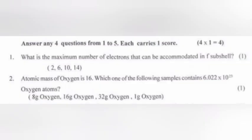Question 1: What is the maximum number of electrons that can be accommodated in F subshell? Answer: 14. Question 2: Atomic mass of oxygen is 16. Which one of the following samples contains 6.022 x 10^23 oxygen atoms? Answer: 16g oxygen.